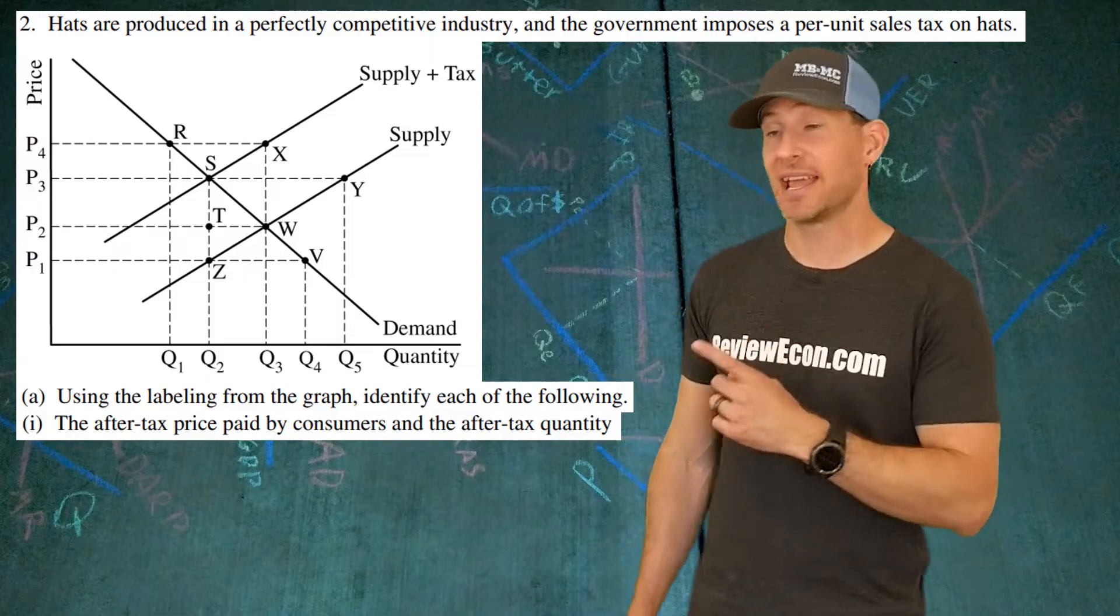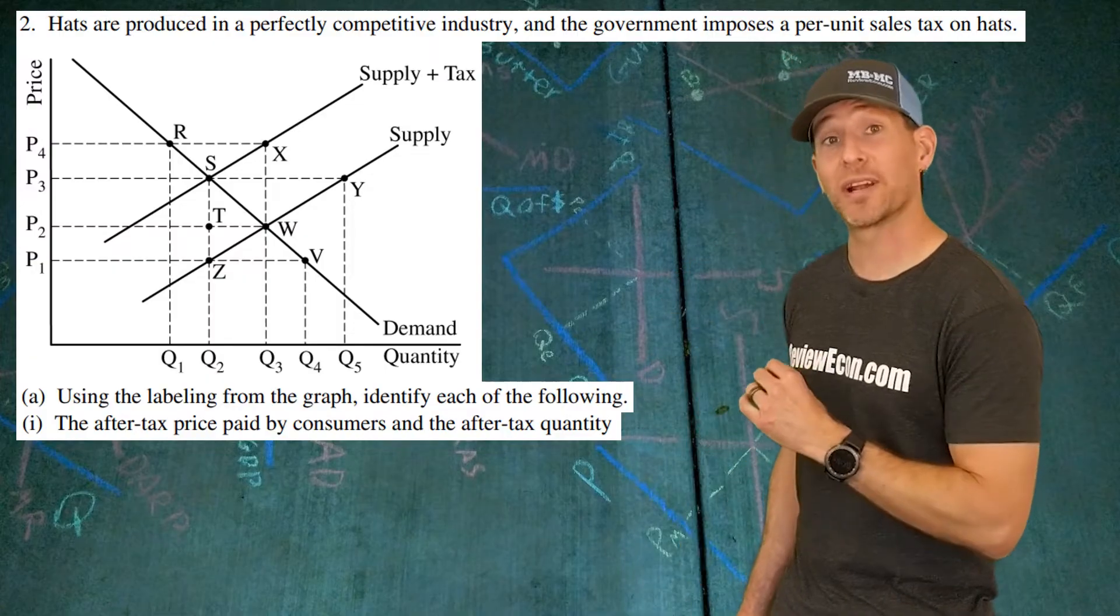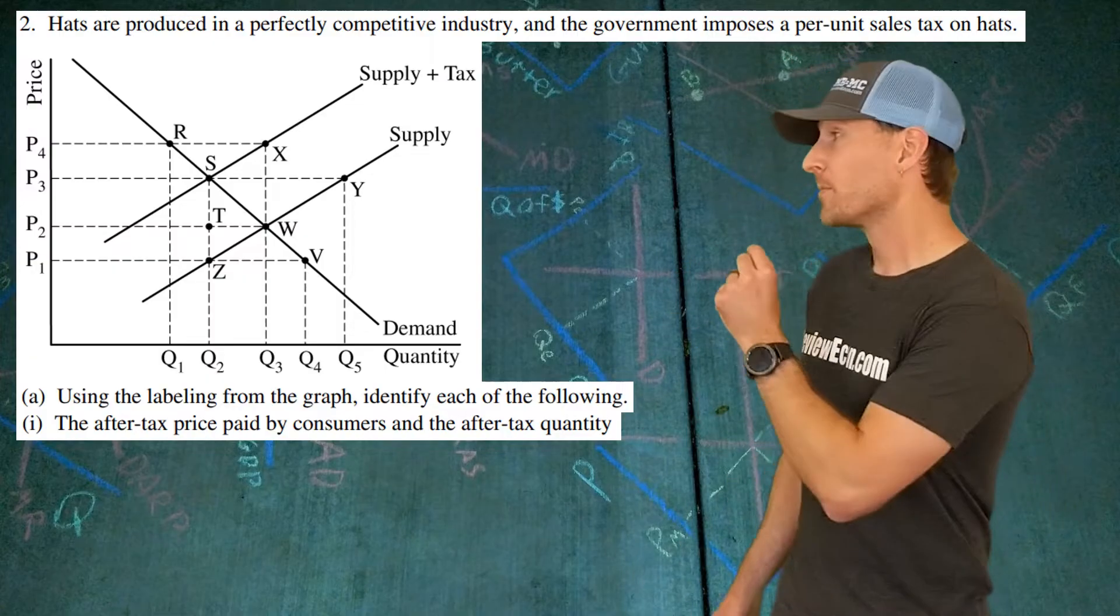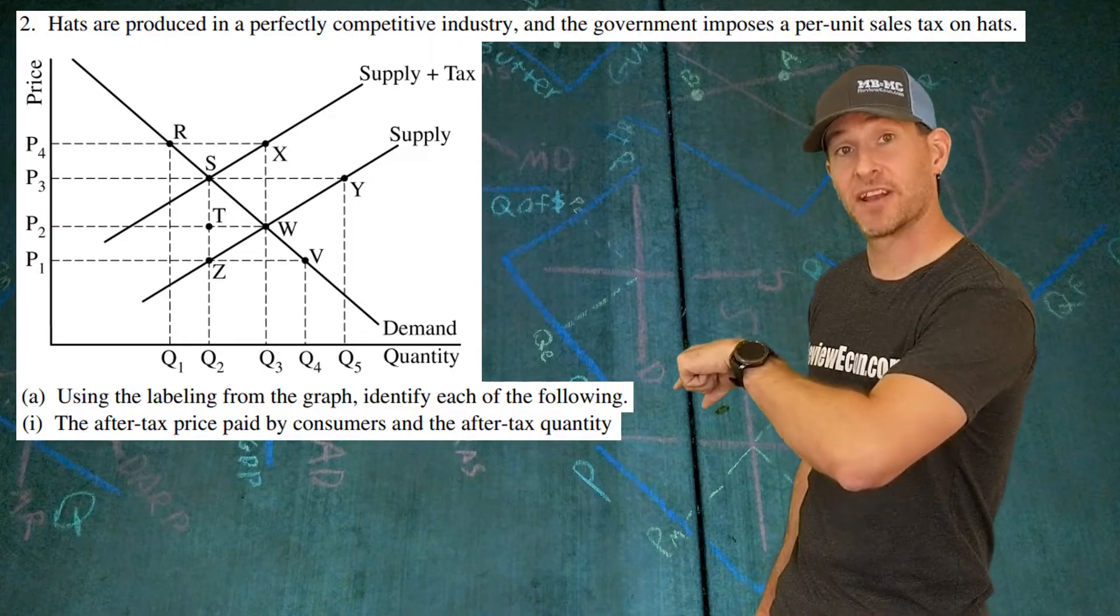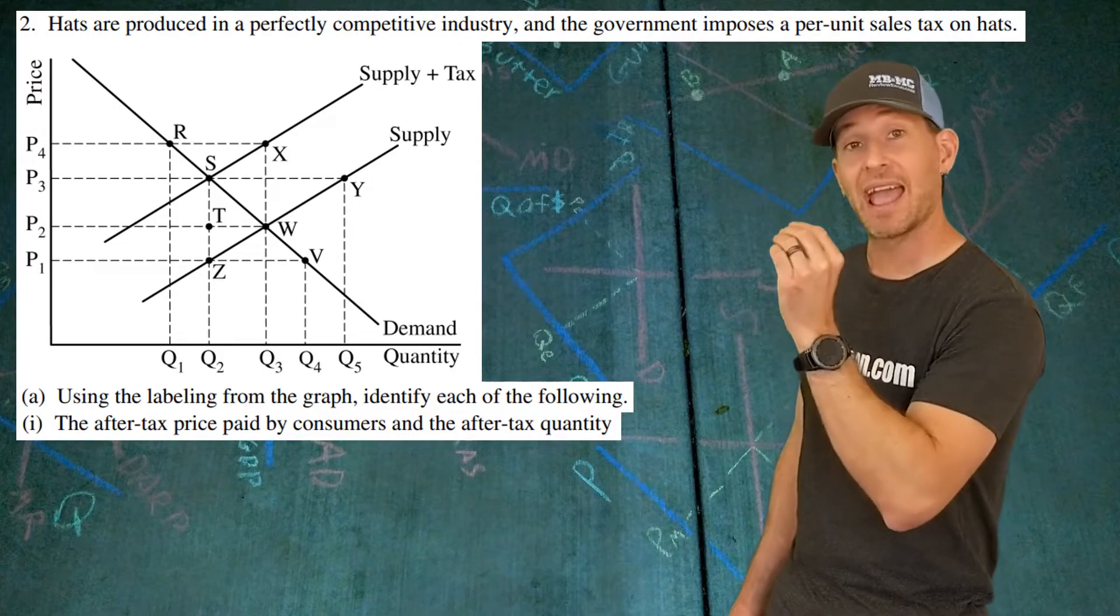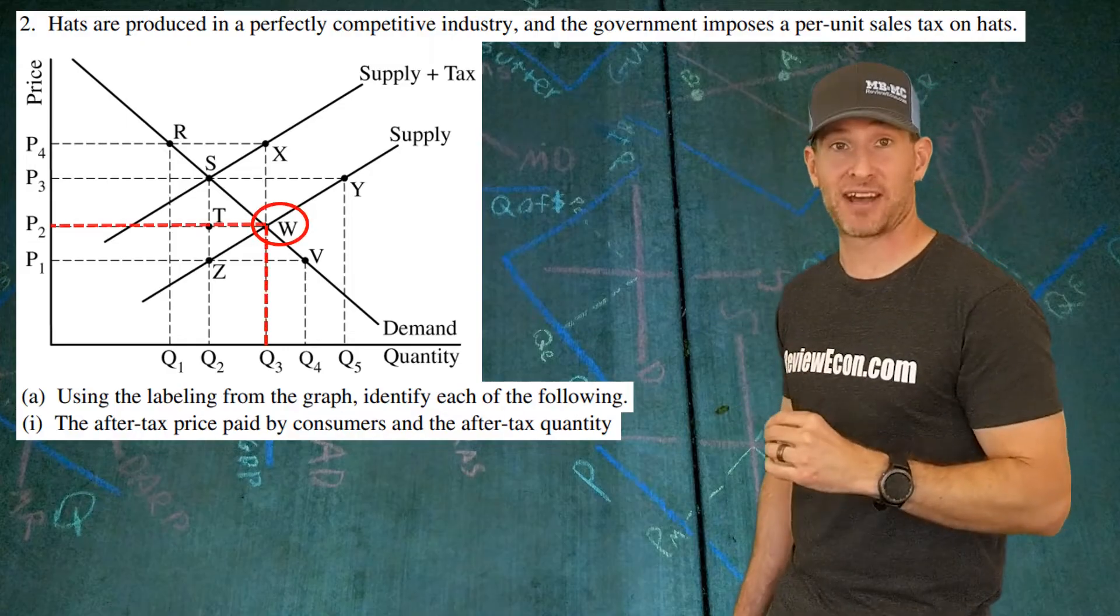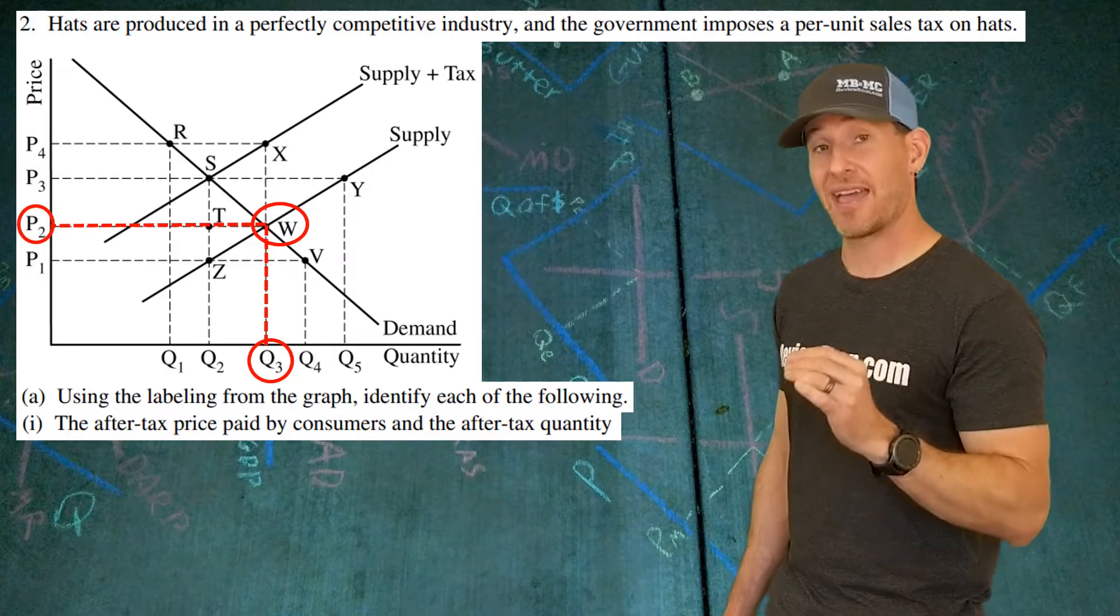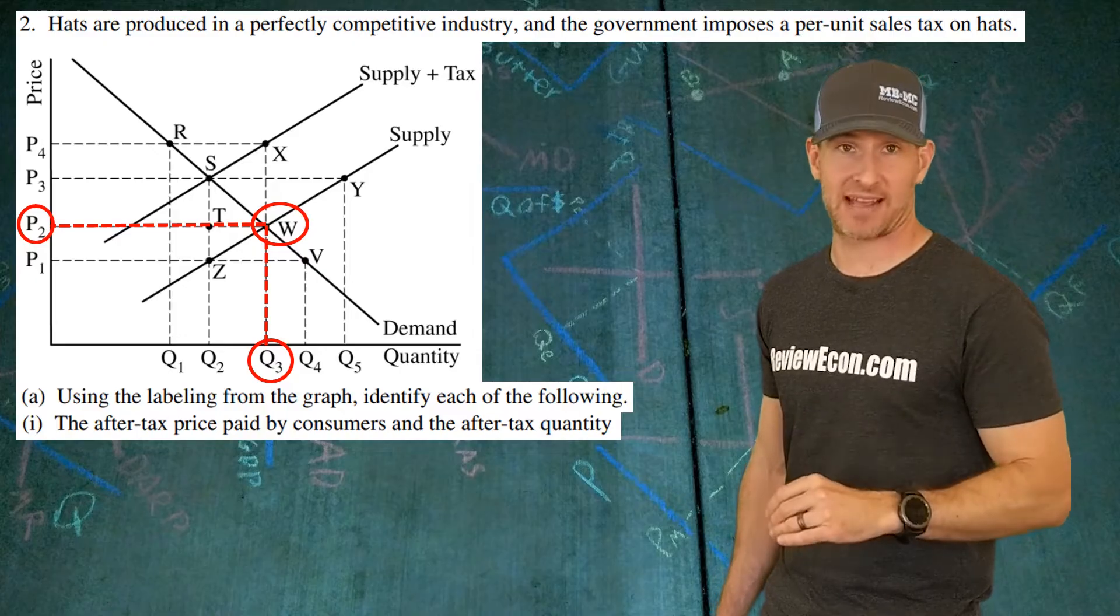To figure that out, take a look at the graph that has already been drawn for us. Before the tax, we have a downward sloping demand curve and an upward sloping supply curve, and there's an intersection that identifies the quantity and the price that will exist before the tax.